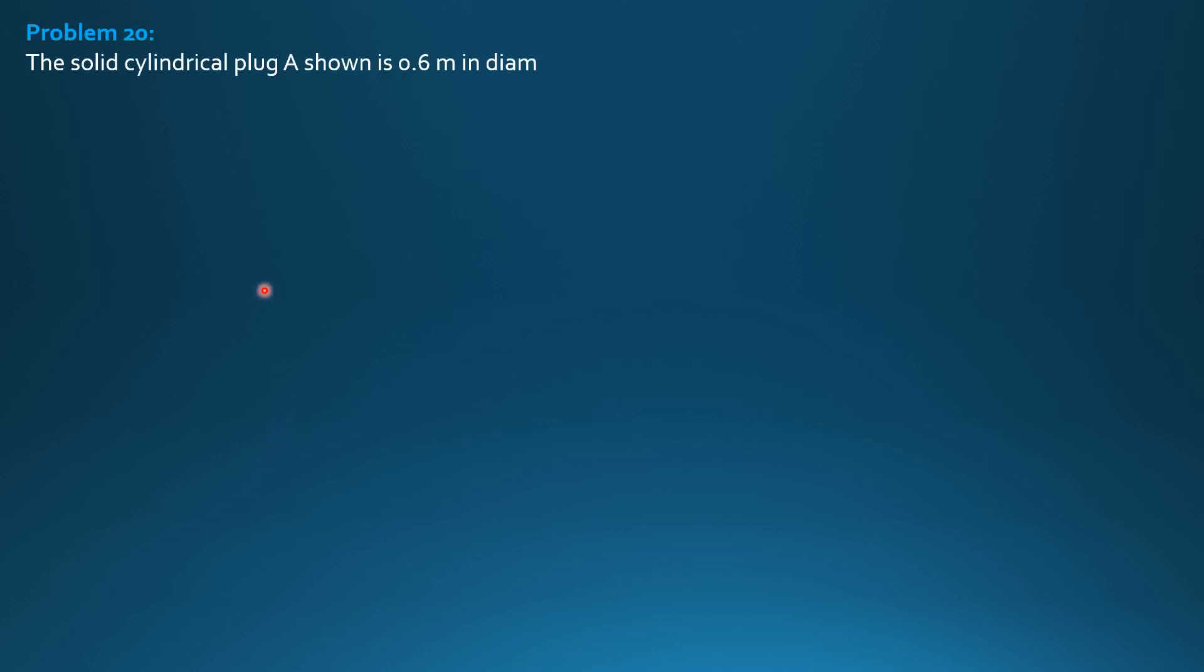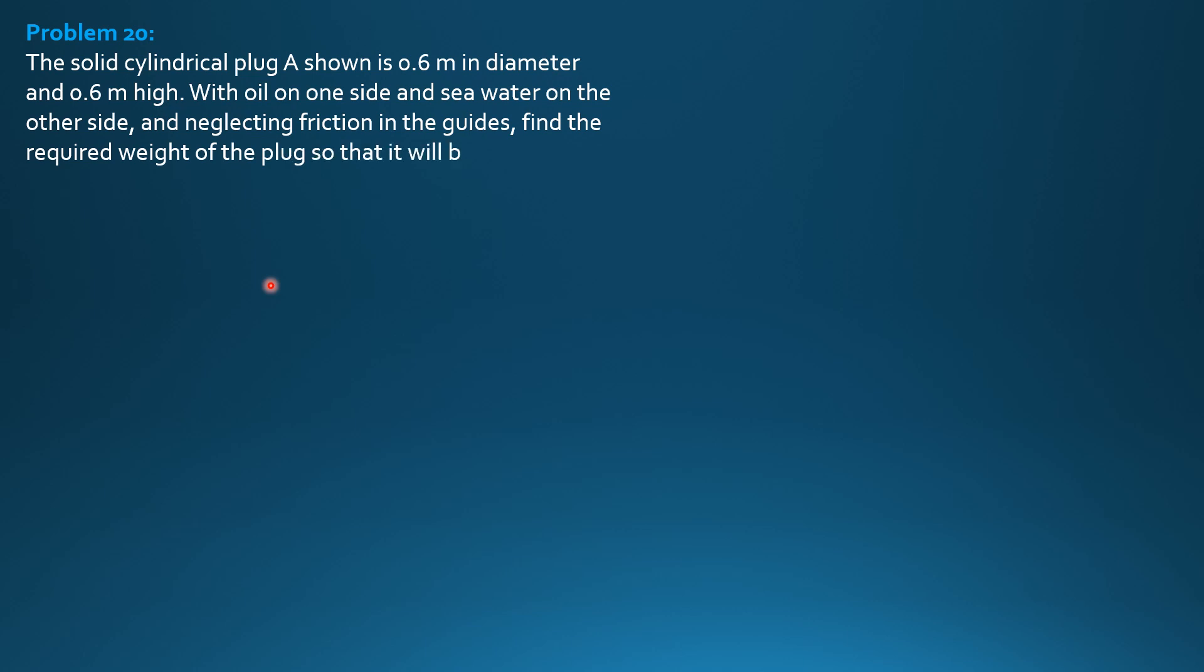The solid cylindrical plug A shown is 0.6 meter in diameter and 0.6 meter high. With oil on one side and seawater on the other side, and neglecting friction in the guides, find the required weight of the plug so that it will be in equilibrium.